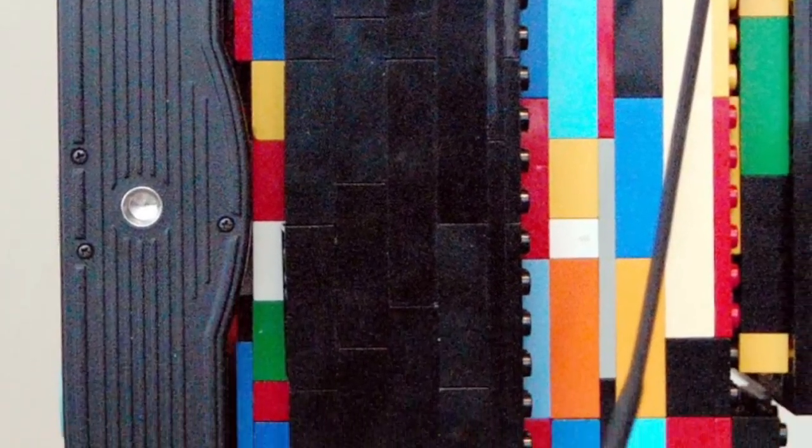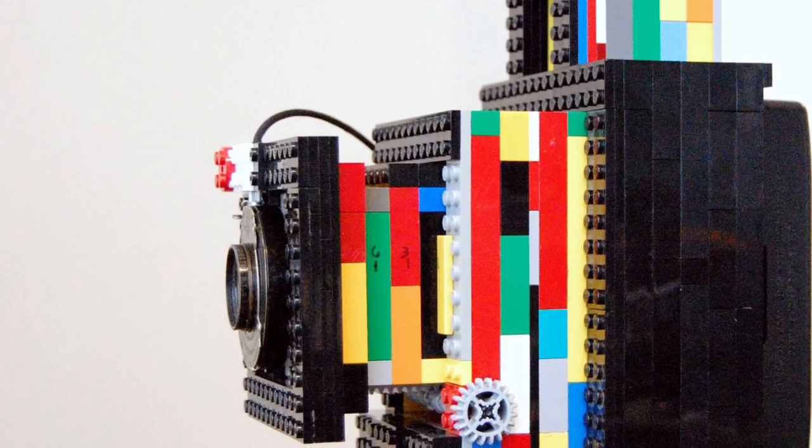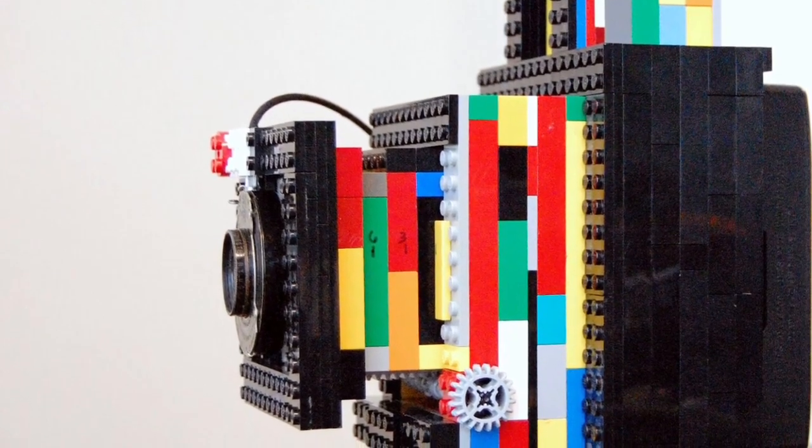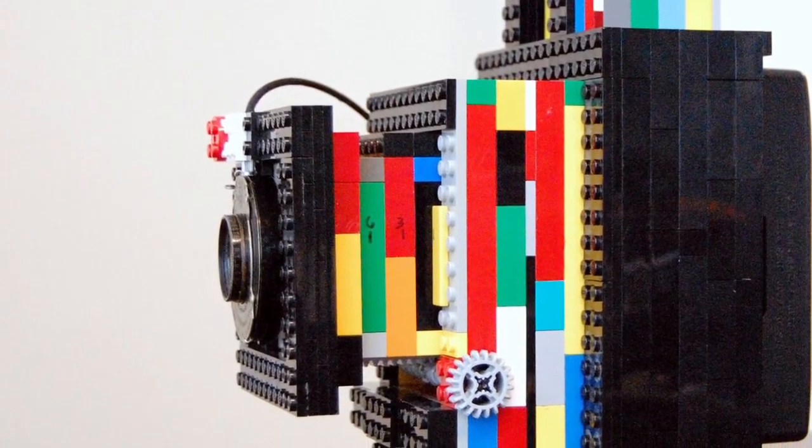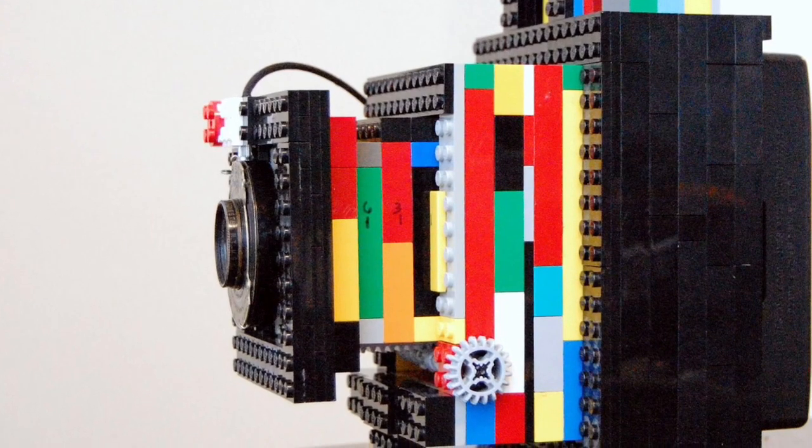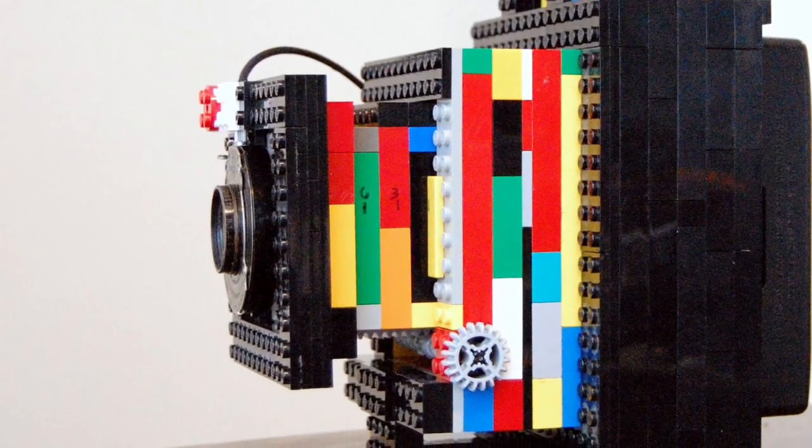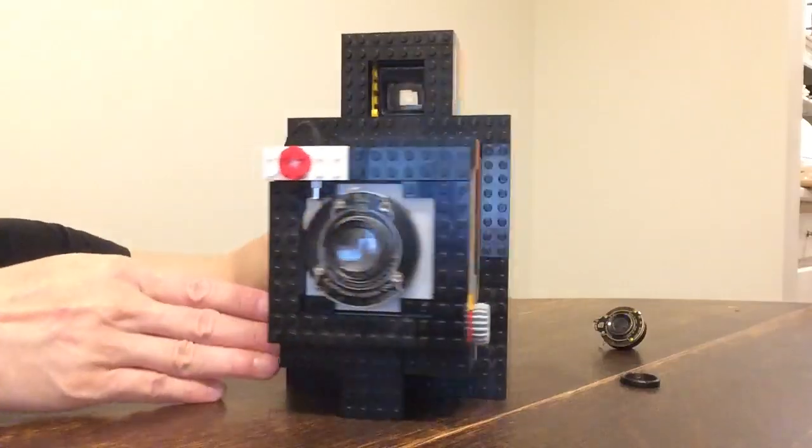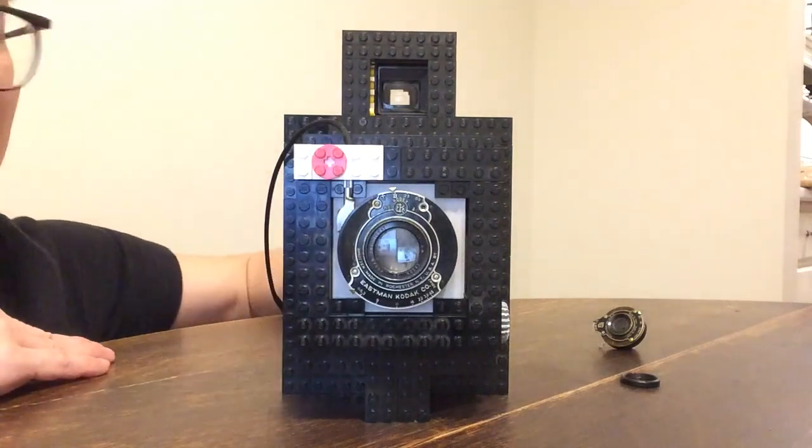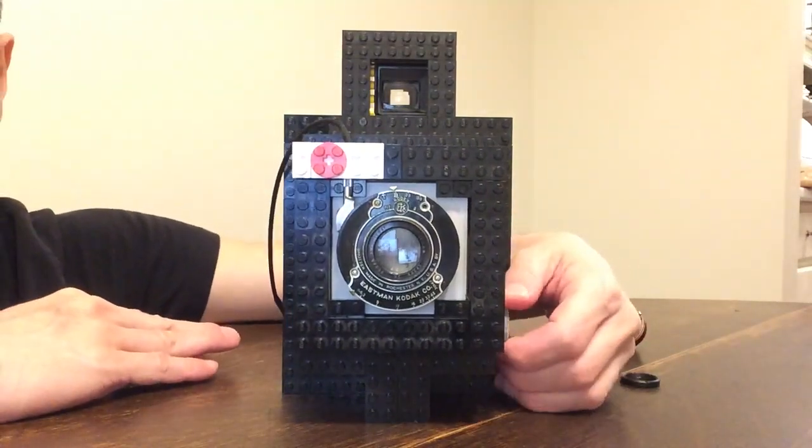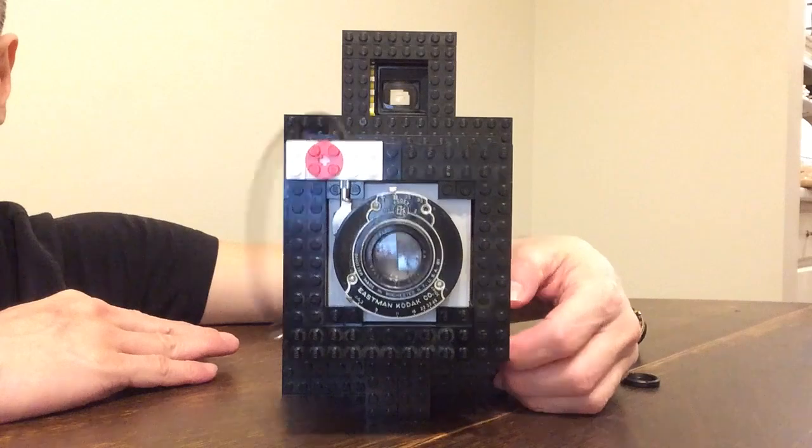One of the new features of this camera design is that it has a viewfinder, but more importantly it can focus. In a lot of my other designs I've always been looking for a front cell focusing lens. Don't have many of those, so I had to finally figure out how to rack the focus, how to move the front panel back and forth, and I finally figured it out.